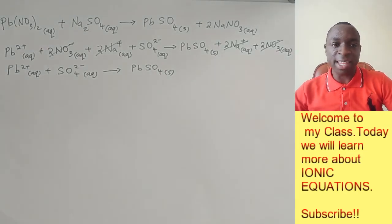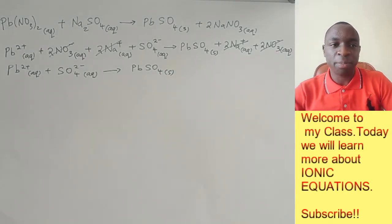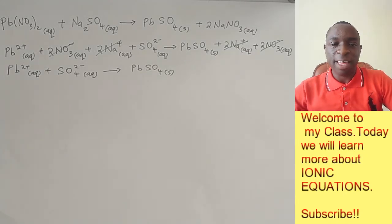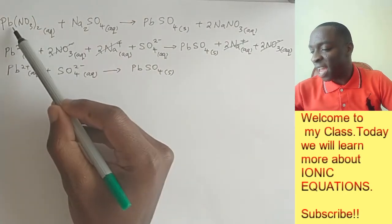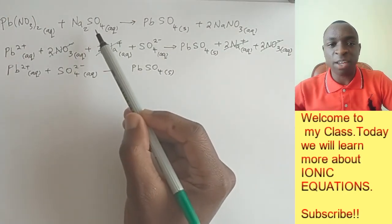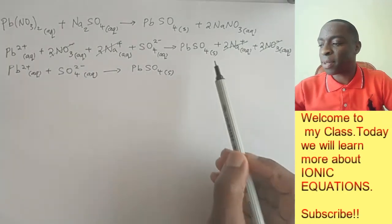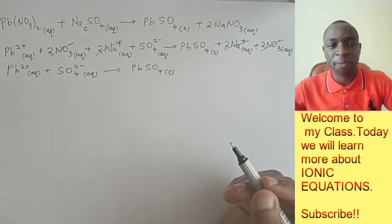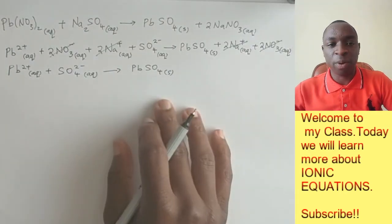So as you can see, in this kind of a reaction is known as a precipitation reaction. The lead ions and the sulfate ions are the ones that reacted to form the precipitate, which is the lead sulfate. The ionic equation is a very simple way.